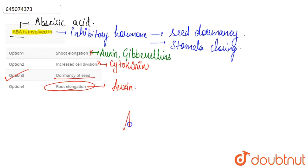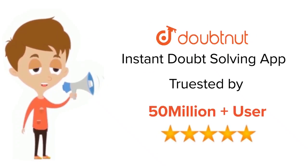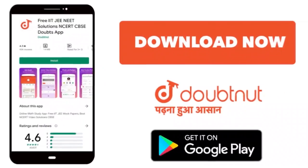For class 6 to 12, IIT-JEE and NEET level, trusted by more than 5 crore students. Download Doubtnet app today.